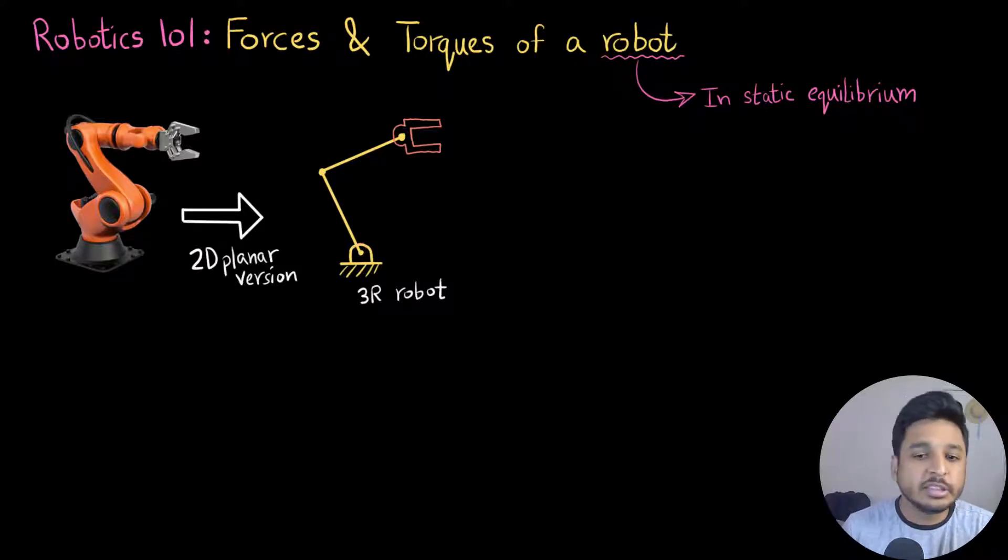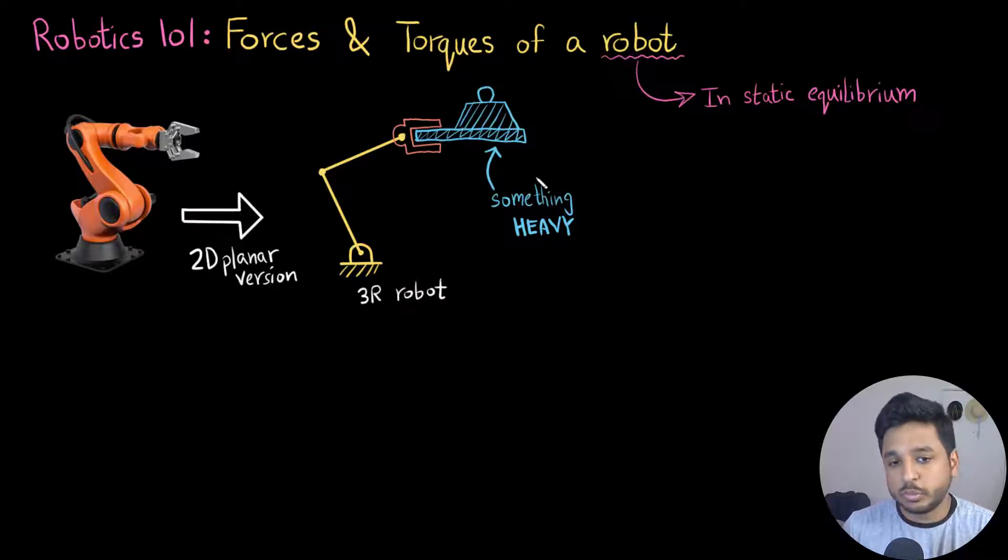Now let's say this robot is holding something heavy. So this object that it is holding would have a weight which would kind of make the robot's end effector push a little down and it would also have a moment which I have marked here. So the weight is acting downwards and then there is a moment which in this case is acting in the clockwise direction.